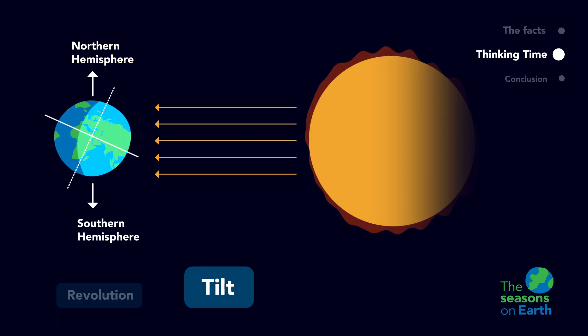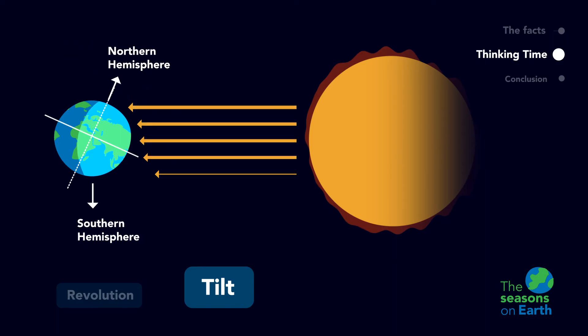Because the northern hemisphere is tilted towards the sun, the sunlight hits this part of the earth directly. This means that this half of the earth will have higher temperatures and will experience the summer season.